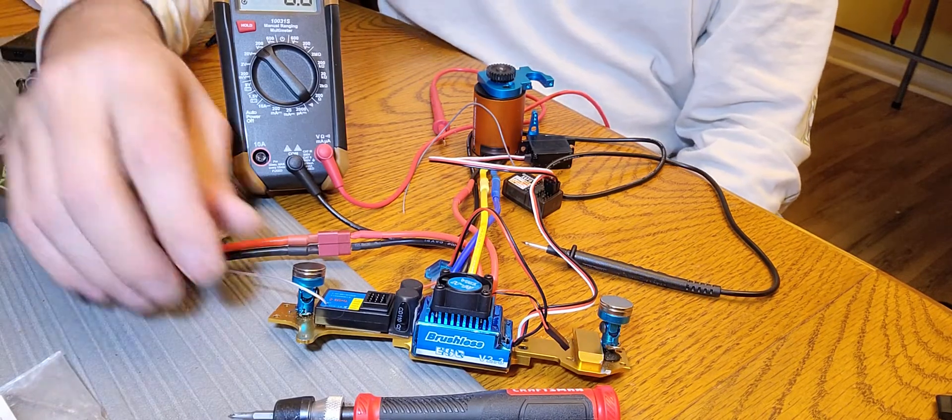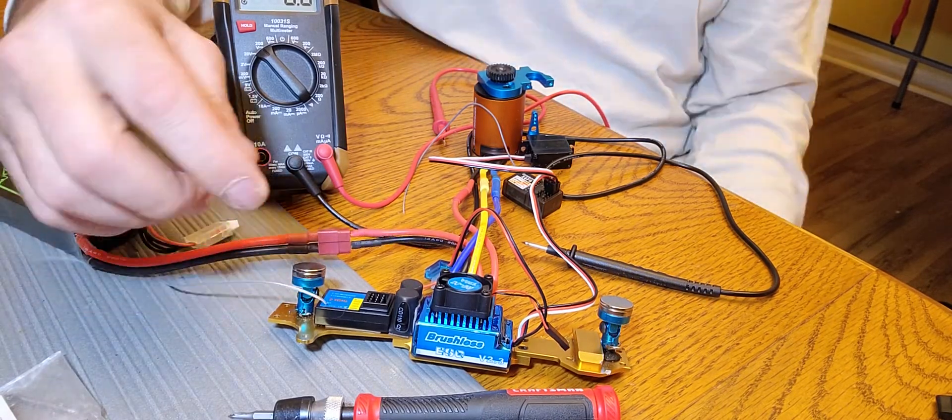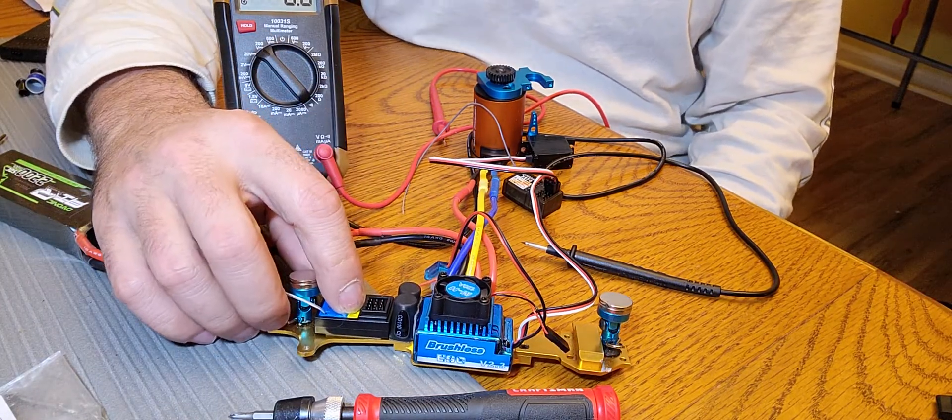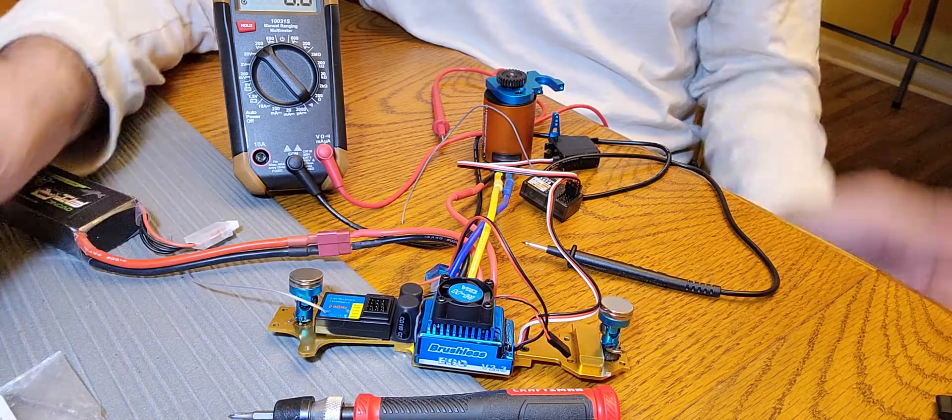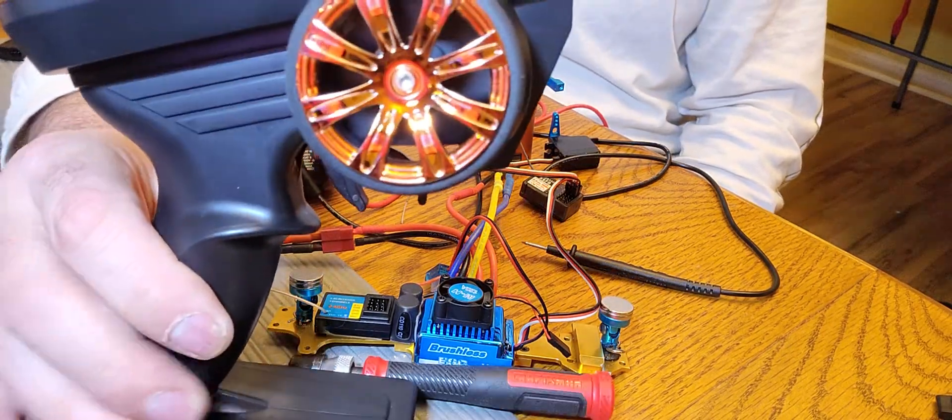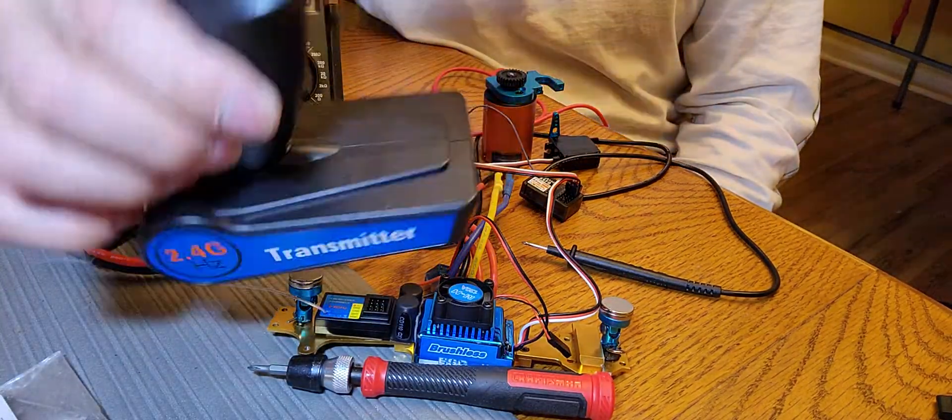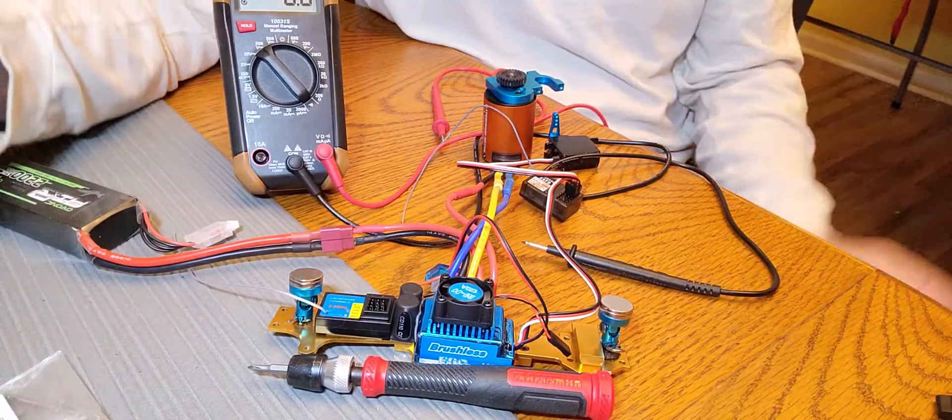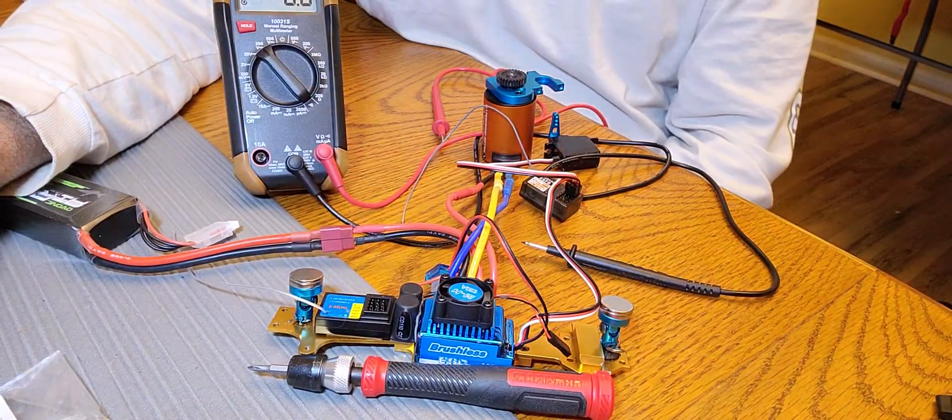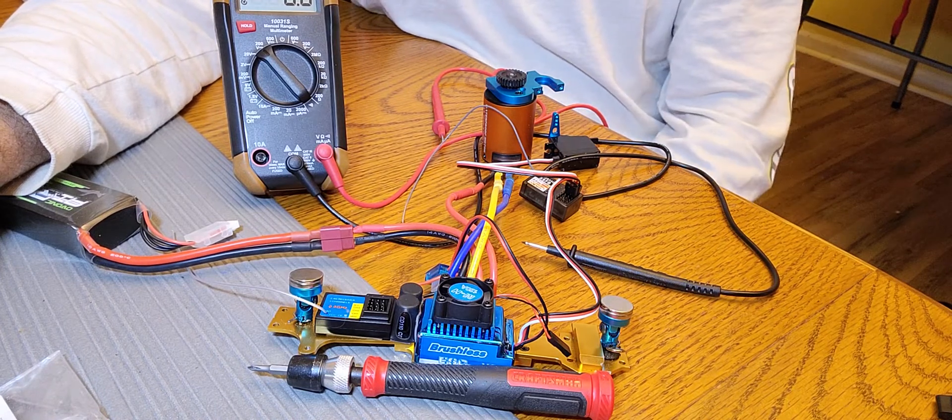I got the ESC, the receiver, and this motor and the transmitter from Aliexpress. That's the transmitter that came with it, which, you know, no big deal, it's just a transmitter, nothing fancy. In the video that I posted before, if you go to my channel, you'll see that I posted a video where the servo was acting extremely glitchy.